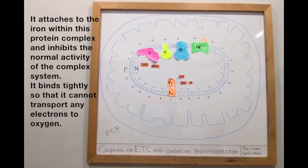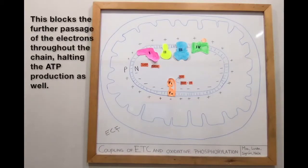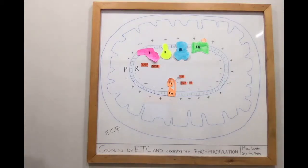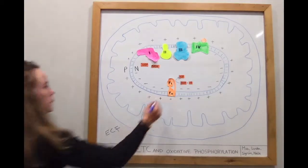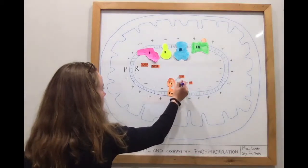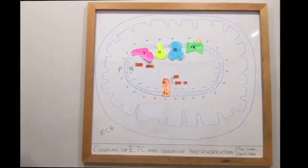It attaches to the iron within this protein complex and inhibits the normal activity of the complex system. It binds tightly so that it cannot transport any electrons to oxygen. This blocks the further passage of electrons throughout the chain, halting the ATP production as well. We hope you enjoyed our video. Thank you very much for listening.